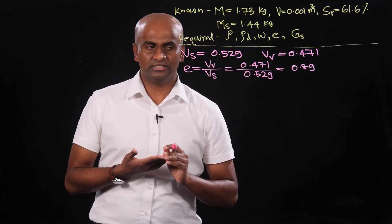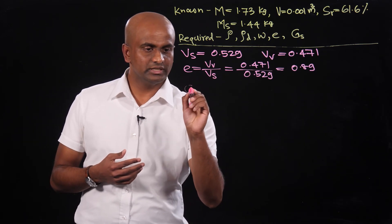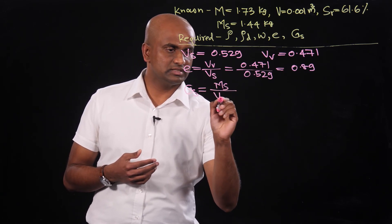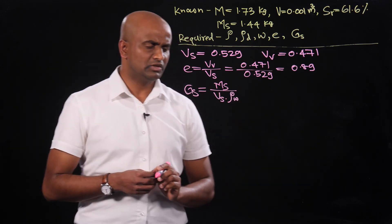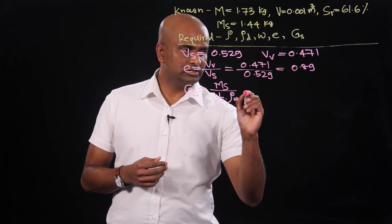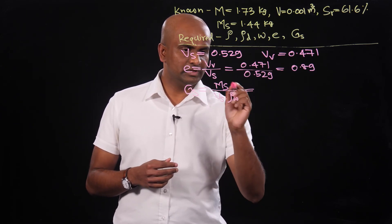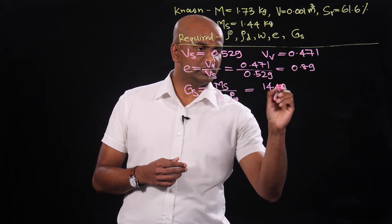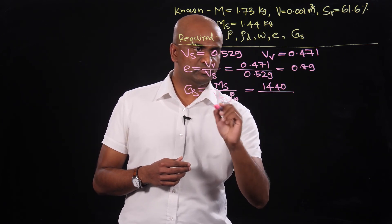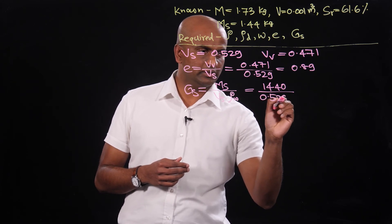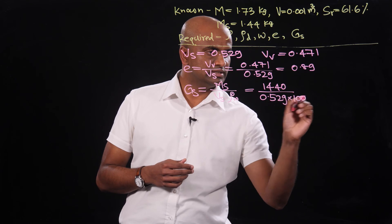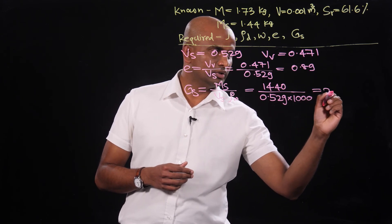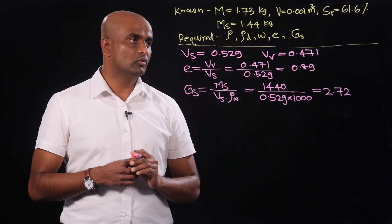Next we calculate the specific gravity Gs. By definition, Gs equals mass of solid divided by (volume of solid times density of water). The mass of solid in 1 cubic meter volume is 1440 kilograms, the volume of solid is 0.529 cubic meters, and the density of water is 1000 kilograms per cubic meter. This gives a specific gravity Gs of 2.72. That completes part A.